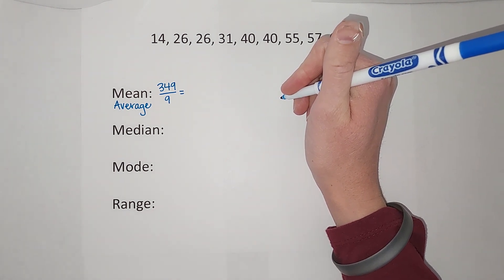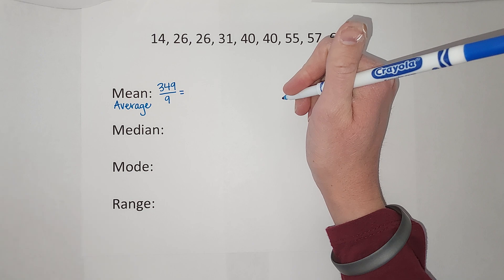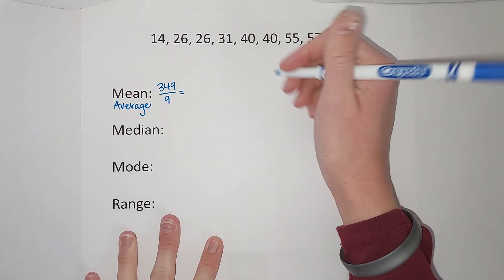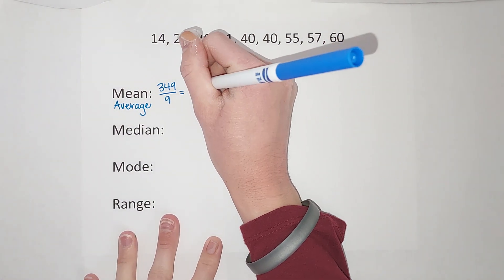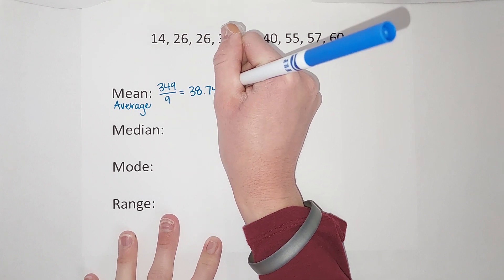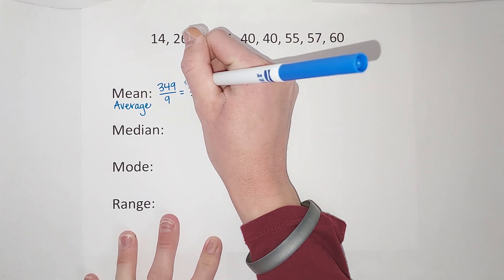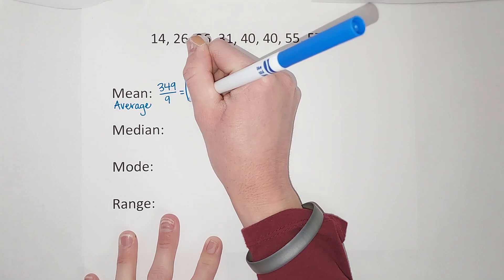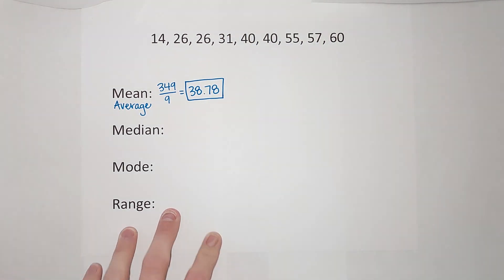We are just going to round to the nearest hundredth, which is two decimal places, so I'm going to round it so it is 38.78. If you need some help with rounding decimals, I'll link a video in the corner.